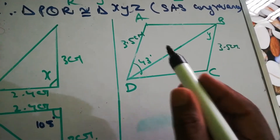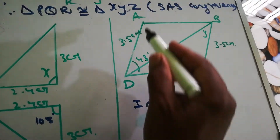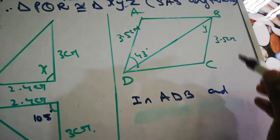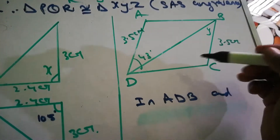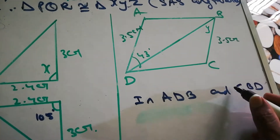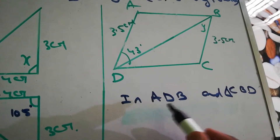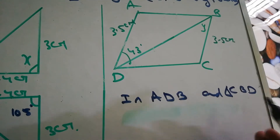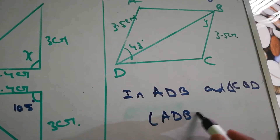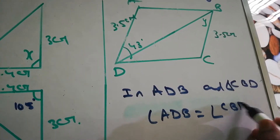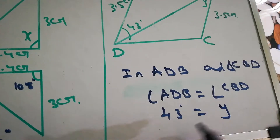Next part: the diagram shows 3.5 and 3.5. Taking triangle ADB and triangle CBD — AD equals BC (both 3.5), and BD is the common side. Angle ADB equals angle CBD. Since angle ADB is given as 43 degrees, Y equals 43 degrees.